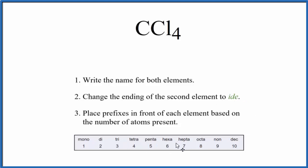So we're gonna use these rules here to write prefixes to show the number of each atom. We'll start by writing the name for both elements. We have carbon and chlorine.